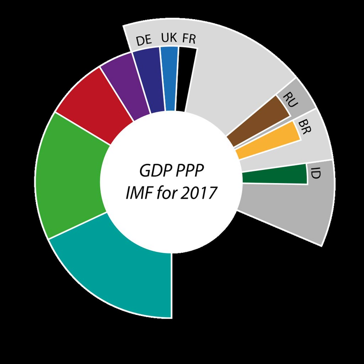Notes: IMF estimate. Cubed data excludes French Polynesia. China's PPP is based on prices for 11 administrative regions, extrapolated to the full country, and an urban-rural breakdown. China's entry does not include the two special administrative regions, namely Hong Kong and Macau, which are listed separately.